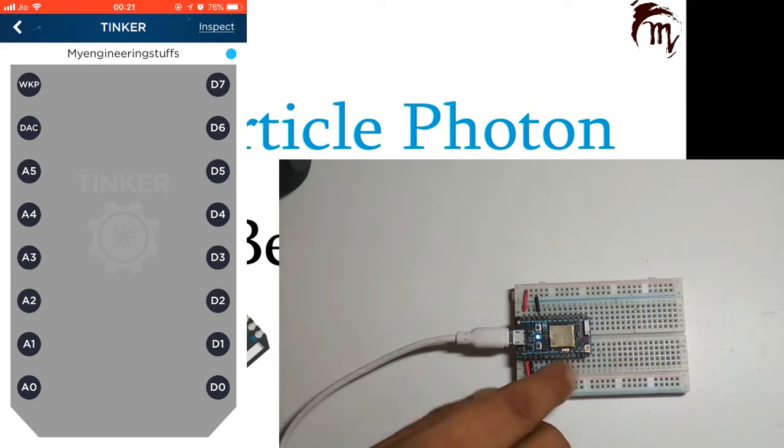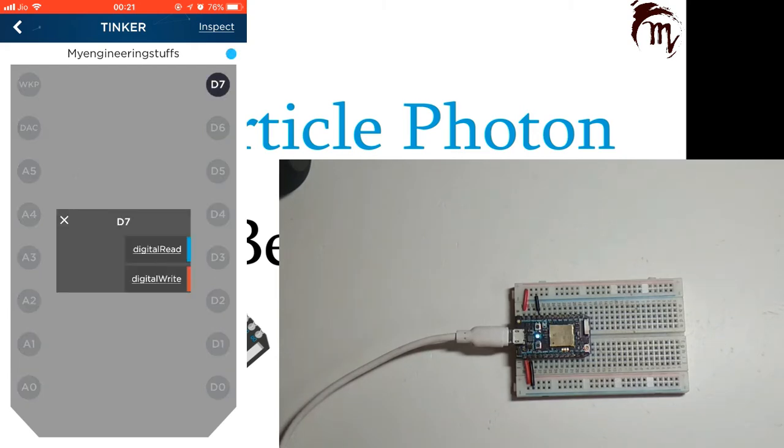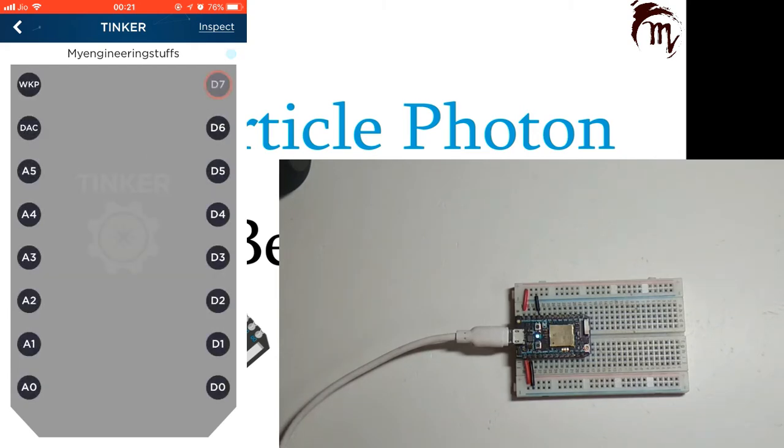Let me set the D7 pin as digital write. I'm setting this because the onboard LED is connected at the D7 pin. Whenever you toggle this D7 pin to high, it will light the LED on the device, and when you set it low, it will turn off. You can play with this by turning it on and off.